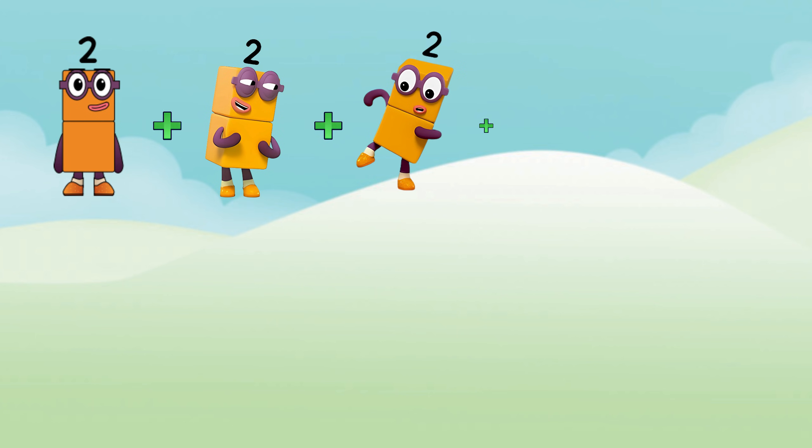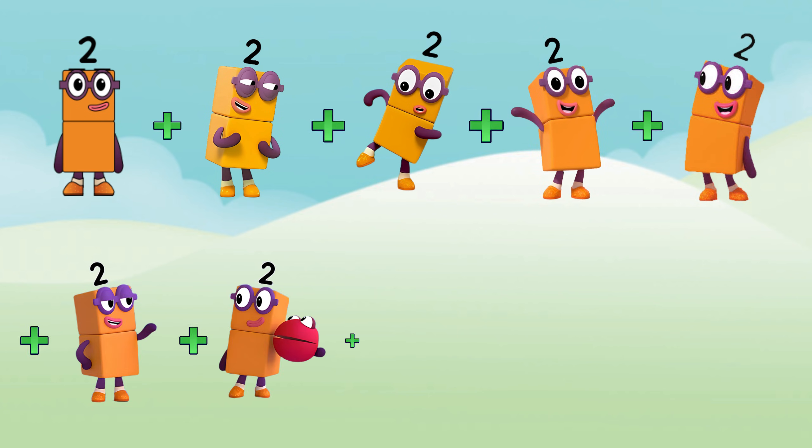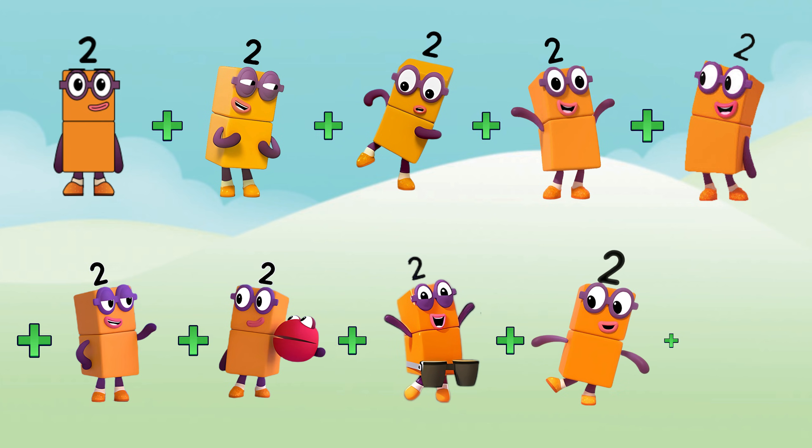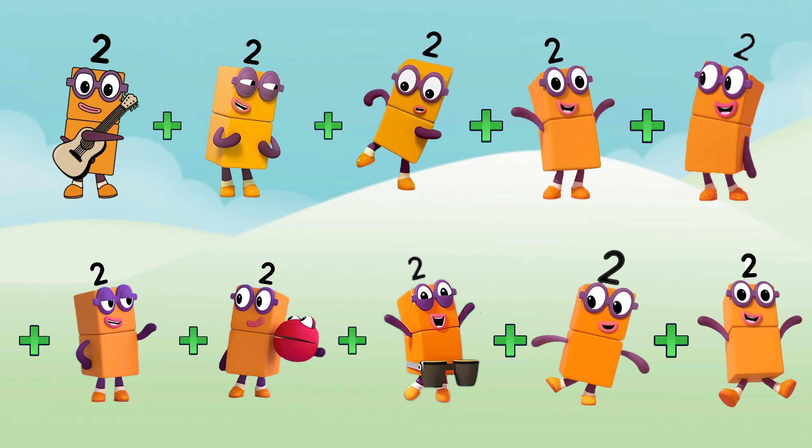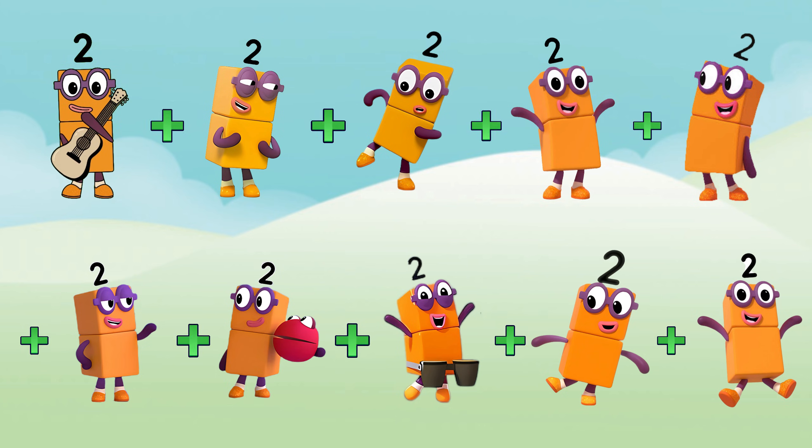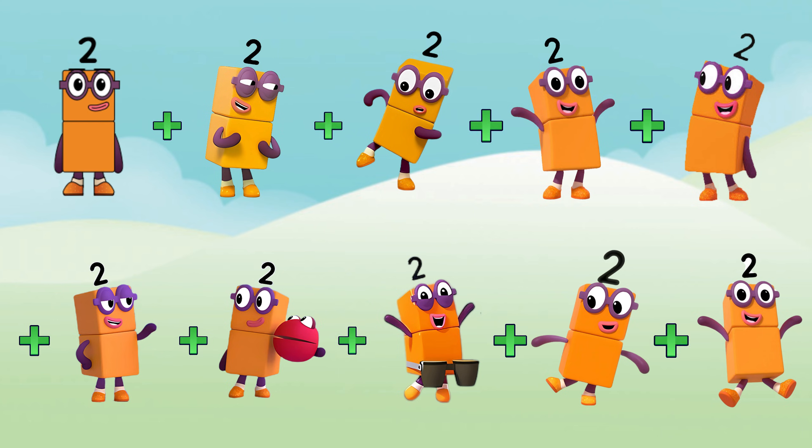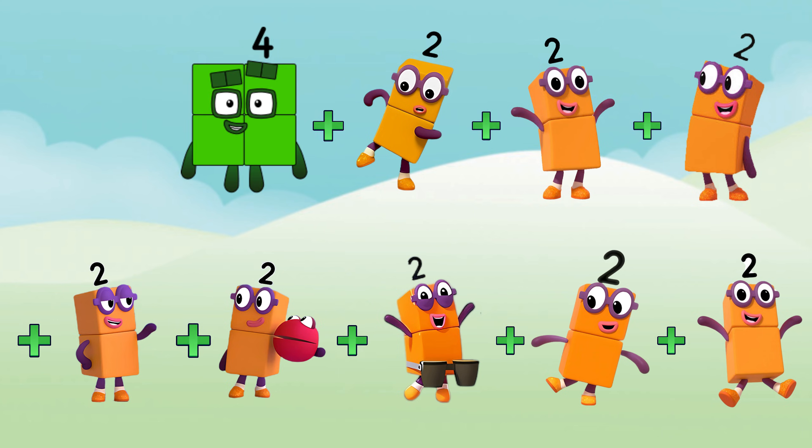Next, we repeat it with two. We add two ten times to make a timetable of two. Let's start it. Two. Two plus two is four.